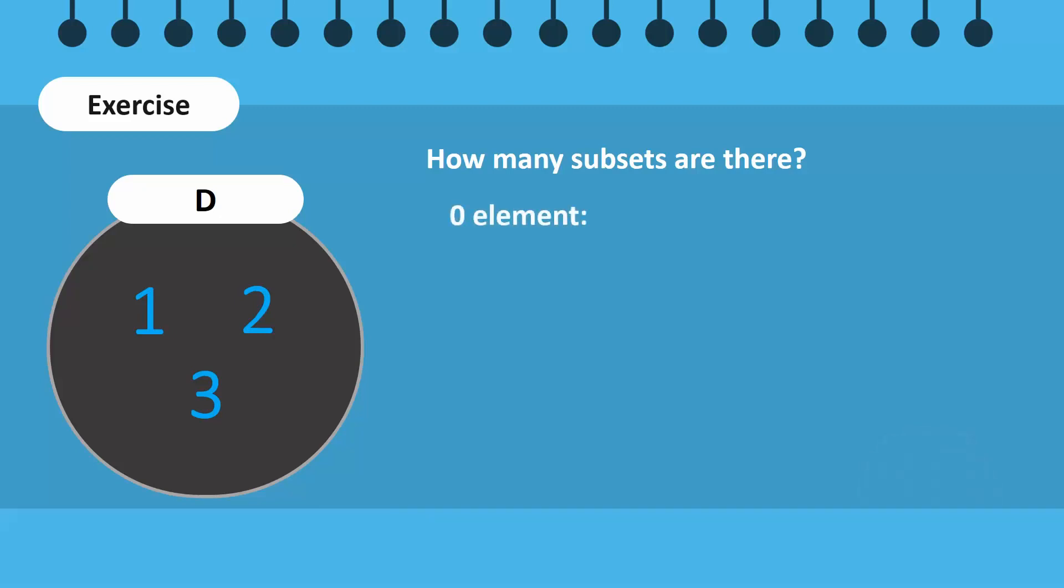For 0 elements, there is only one possible subset, which is the empty set. For 1 element, we have 3 possible subsets, each containing 1 different element of set D. For 2 elements, we have 3 possible subsets, each containing a different pair of elements of set D.